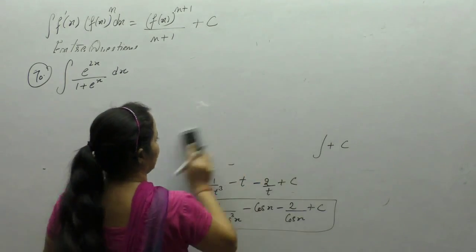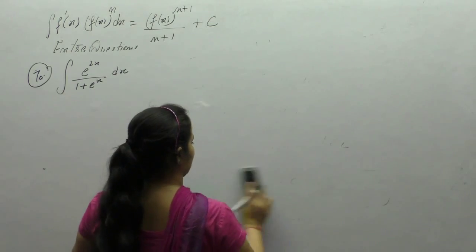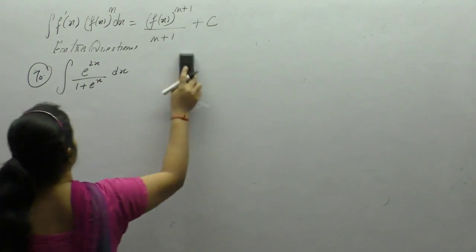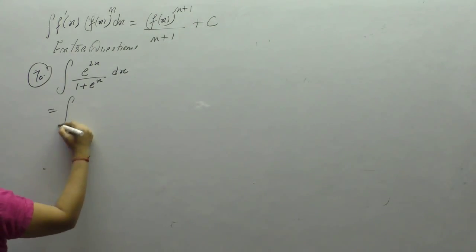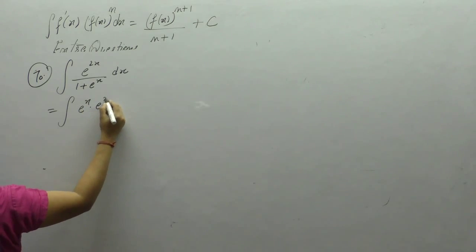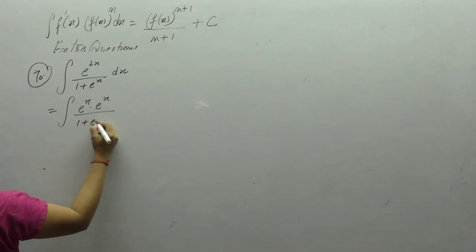In this question we can write e power 2x as e power x into e power x, over 1 plus e to the x.